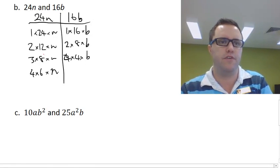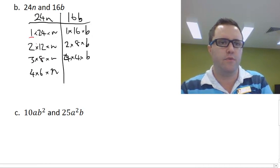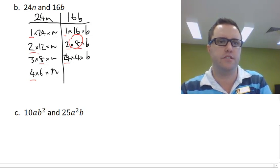Let's mark all our common factors. We have 1s, 2s, 4s, and 8s. Obviously the highest of all those is the 8, so the highest common factor of 24N and 16B is 8.